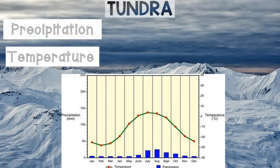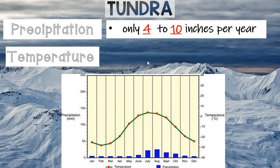You might think that with all that ice and snow the tundra would have a lot of precipitation, but because it is so cold, cold air doesn't hold very much moisture. As a result, it actually only gets four to ten inches of precipitation per year. In contrast, here in Virginia we get 50 to 70 inches per year, so the tundra is a much lower and much drier area.